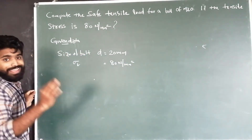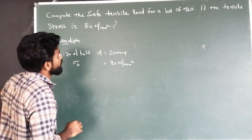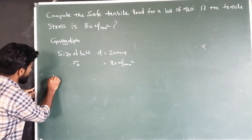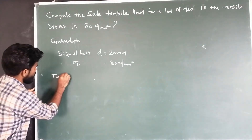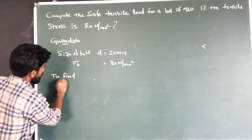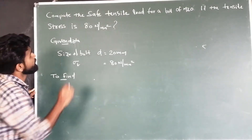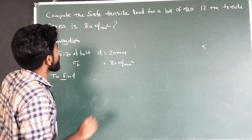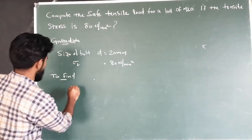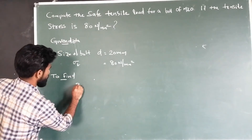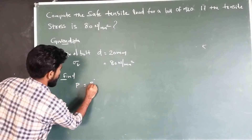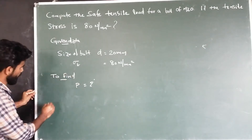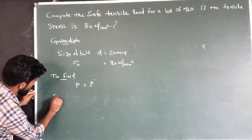Now we are going to calculate for the bolt M20. We have to find the safe tensile load. Safe tensile load is P. Load is equal to P. So we have to complete the solution.